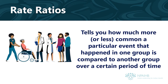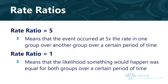A rate ratio is a tool that is helpful for comparing rates between groups. A rate ratio tells you how much more or less common a particular event happened in one group compared to another group over a certain period of time. For example, a rate ratio of 5 means that the event occurred at 5 times the rate in one group over another group over a certain period of time. What if your rate ratio is 1? That means that the likelihood something would happen was equal for both groups over a certain period of time.